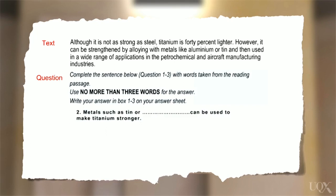Let's look at question two from the titanium text. This time the gapped sentence says, metals such as tin ore can be used to make titanium stronger. Now look at the first part of the second sentence in the text. However, it can be strengthened by alloying with metals like aluminium or tin. Which idea is the best fit? Let's try each one. And aluminium? That's not right. We have two connectives there.